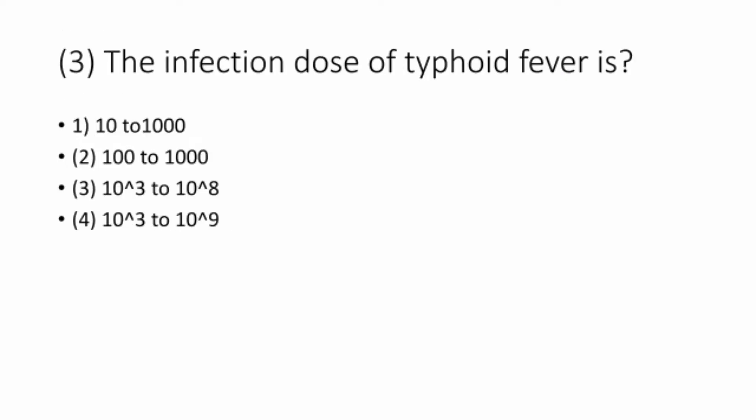Q3. The infection dose of typhoid fever is 10³ to 10⁹. So the correct option is 4.